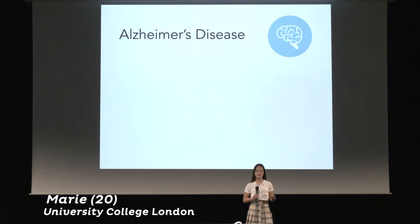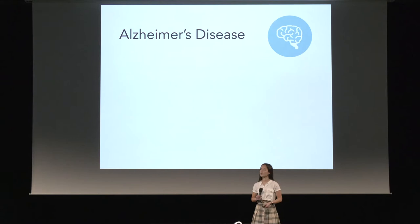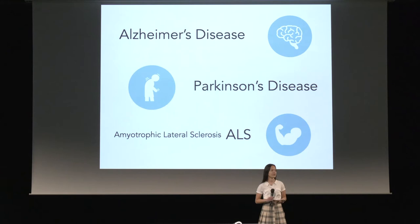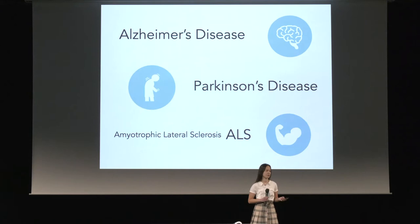You might be familiar with Alzheimer's disease, which is the most common cause of dementia or memory loss worldwide. Or you might know about Parkinson's disease, which is a disease that affects movement and typically involves a lot of shaking and difficulty with coordinating movements. Or you might know about ALS, which also affects movement and your ability to walk, talk and chew. Living with any of these diseases is really tough, both for the patients and for their families or carers.